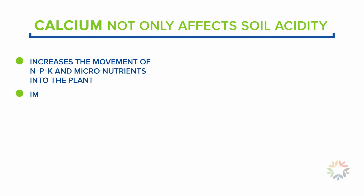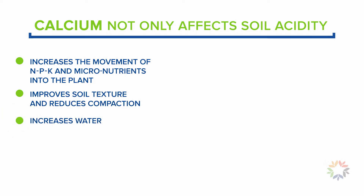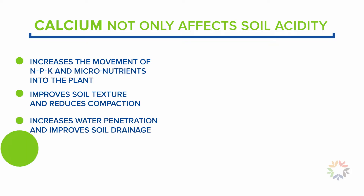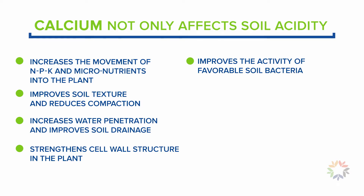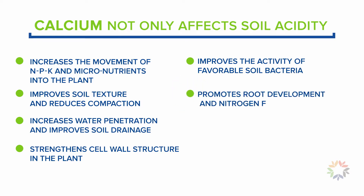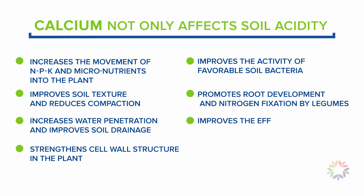Calcium improves soil texture and reduces compaction, increases water penetration and improves soil drainage, strengthens cell wall structure in the plant, improves the activity of favorable soil bacteria, promotes root development and nitrogen fixation by legumes, and improves the efficiency of applied fertilizers and chemicals.